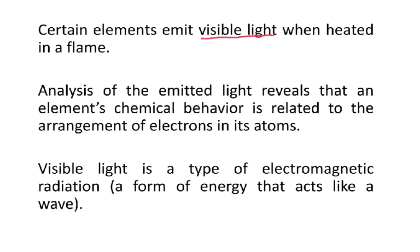Certain elements emit visible light, and each element emits a different color — some are pink, some are red, some are blue, some are white, some are yellow. Analysis of the emitted light reveals that an element's chemical behavior is related to the arrangement of electrons in its atoms, which is pretty much why this whole unit is called electrons and atoms.